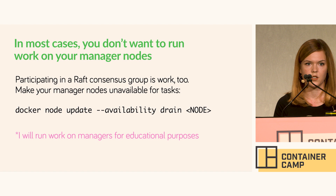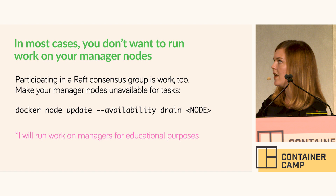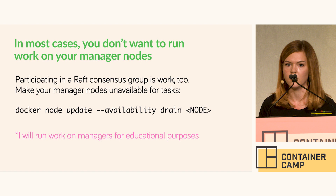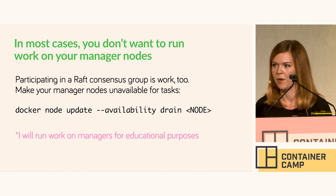In the Docker world — and there's an equivalent in every orchestration system — you can do something like a drain on a node to make sure that no task or work gets scheduled on that node. The Docker command is node update dash-dash availability drain with the node ID as an argument. If you're running a hobby application, it's fine. But if you're trying to make money on something using Swarm, I would recommend draining those manager nodes.